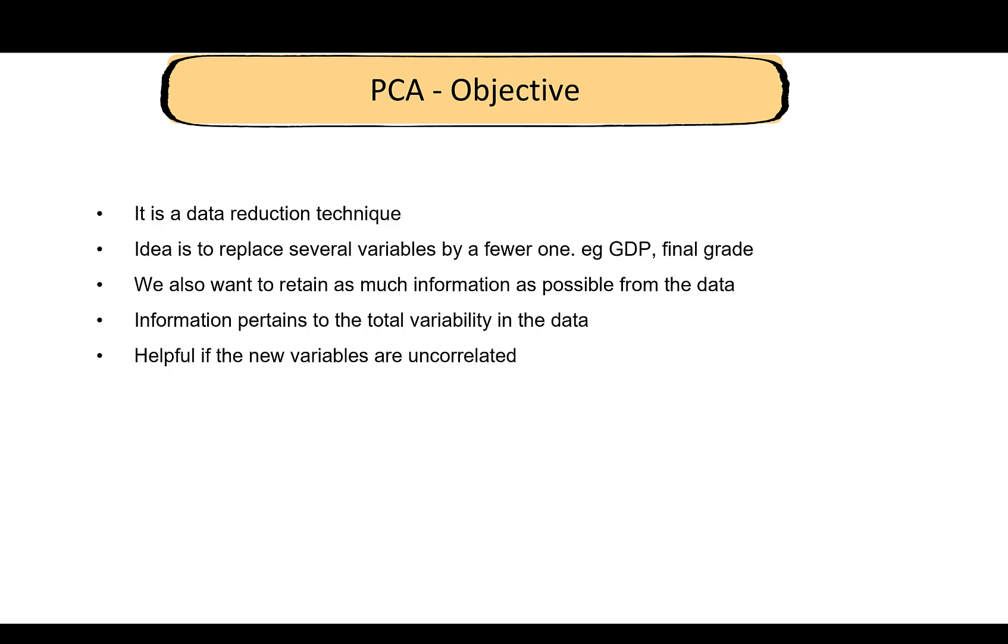To summarize, PCA aims to reduce the dimension of the data. When it does so, it wants to retain as much information as possible. Retaining information is the same as retaining or maximizing the variability in your data, and we want the new variables to be uncorrelated.